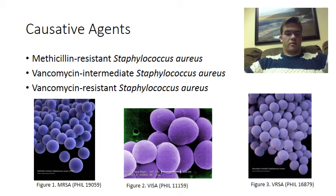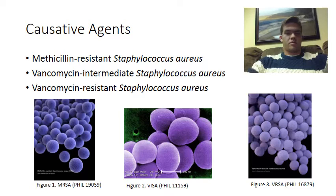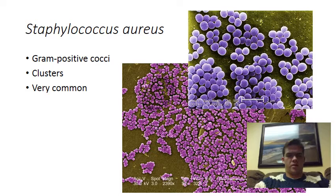These three different strains are shown in the three figures. MRSA is shown on the left, VISA is shown in the middle, and VRSA is shown on the right. As you can see, there's not a whole lot of morphological difference between the three, because they're all just part of the same species of bacteria.